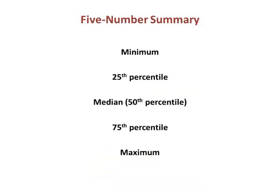Positional statistics are often summarized using what is called the five-number summary. The five numbers in the summary are, in order: the minimum, 25th percentile, median (50th percentile), 75th percentile, and maximum.